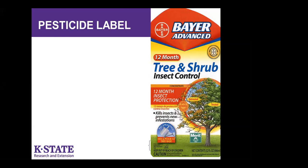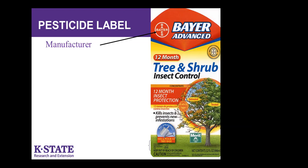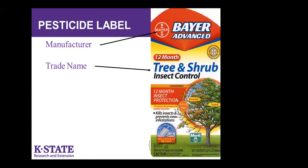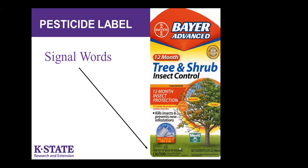The basics of the front placard: the manufacturer name, the trade name, and at the very bottom — in very tiny print — the ingredient statement. For this Bayer tree and shrub insect control example, the active ingredient is imidacloprid at 1.47% of the contents, with the majority being inert ingredients — all tested for safety. The signal word is also on the front placard; in this case it's 'Caution.' All labels say 'Keep out of reach of children.'